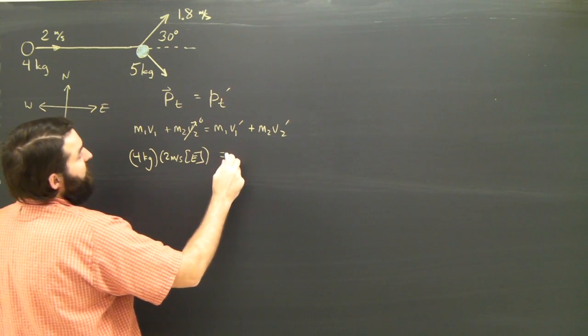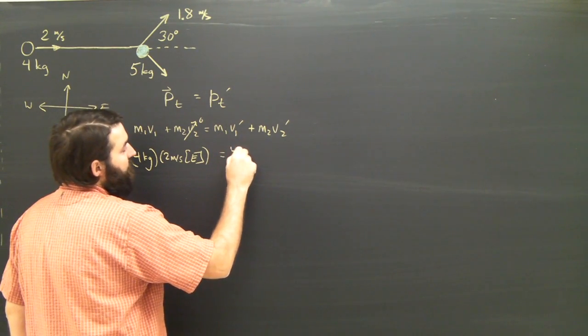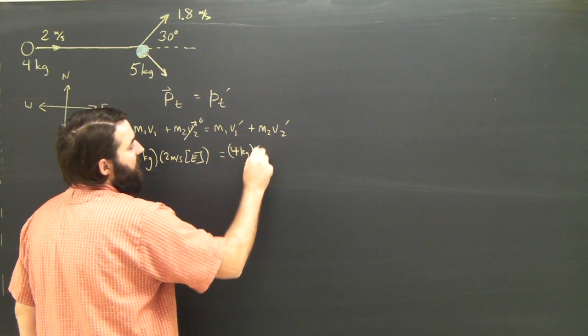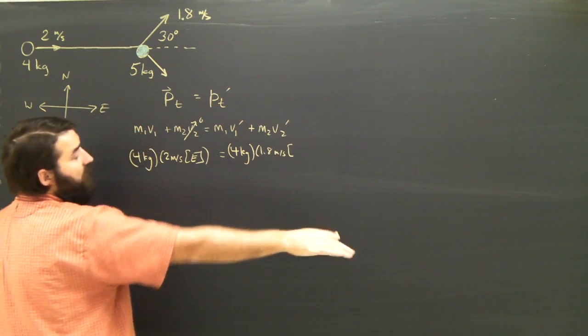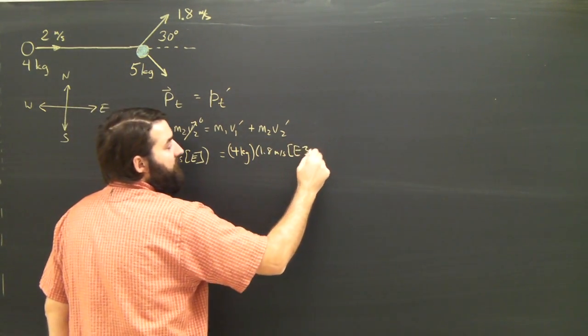is equal to 4 kilograms times 1.8 meters per second, what I'm now going to call east 30 degrees north.